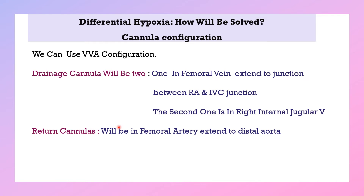The third cannula configuration solution is VVA: using two drainage cannulas — one in the femoral vein extending to the right atrial–inferior vena cava junction, and a second in the internal jugular vein. The return cannula is in the femoral artery, extending to the distal aorta. The key difference: in VAV, an additional return cannula is added in the right internal jugular vein; in VVA, an additional drainage cannula is added in the right internal jugular vein.